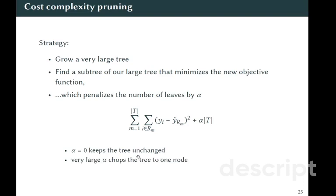Now what happens if we put alpha to be very large? When we penalize the complexity a lot, sometimes it happens that we end up with chopping the tree just to one node, like really not having any branches.